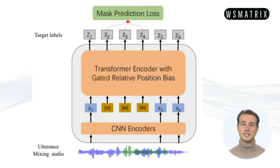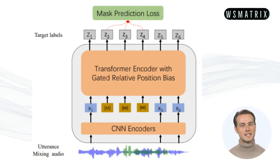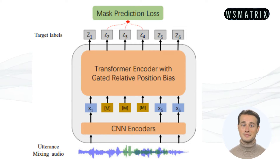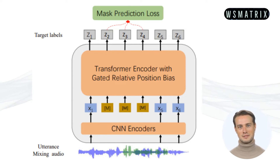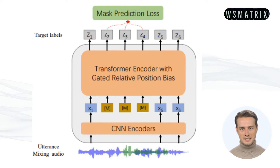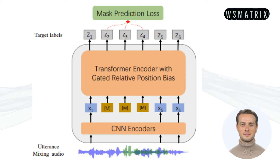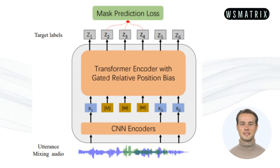Here are some of the key features of WAV-LM. First, it is trained on a massive dataset. WAV-LM is trained on a massive dataset of 94K hours of audio. This allows the model to learn a more comprehensive understanding of speech. Second, it has a transformer architecture. WAV-LM is based on the transformer architecture, which is a neural network architecture that has been shown to be very effective for natural language processing tasks.